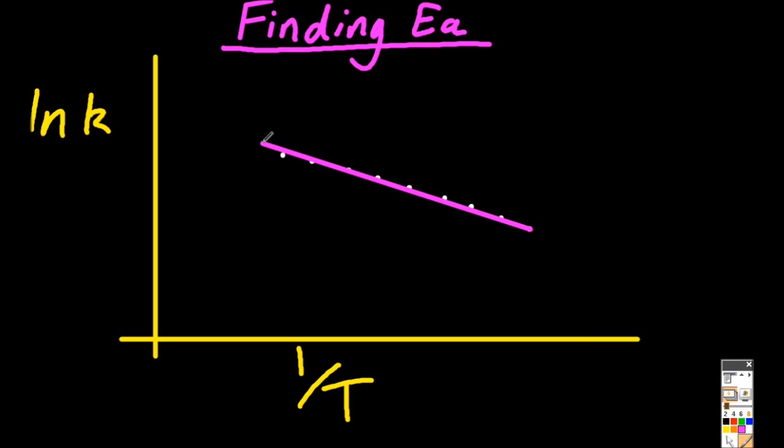Okay, there we go. From this line of best fit, if I now extrapolate out to the intersection with the y-axis, that gives me c, which actually is ln A, the Arrhenius constant.